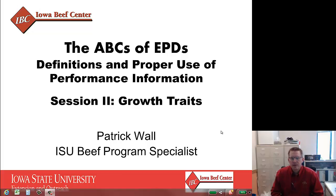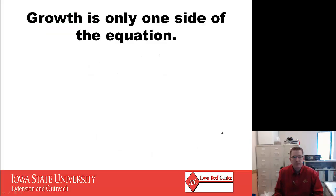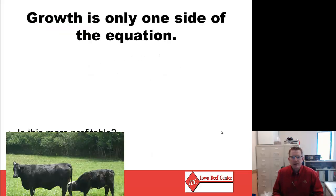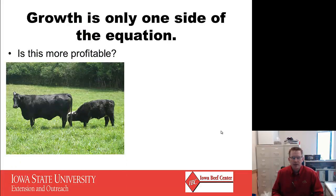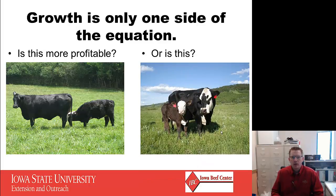Session two in our series on performance information titled the ABCs of EPDs deals with growth traits. Fairly simple on the surface, but we'll break each one of them down and explain the proper use of each in a performance evaluation and selection program. Growth is only one side of the equation — what we need to decide with EPDs is whether one type of cattle is more profitable than another, and what makes them profitable might be much different.